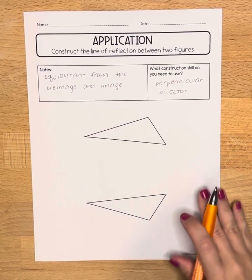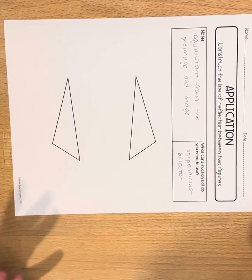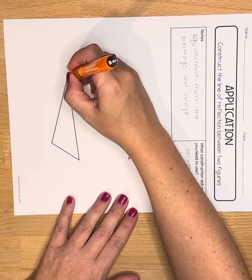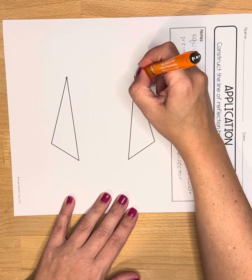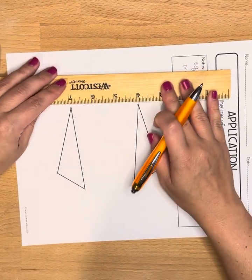All right, to start off I'm just going to rotate my paper a little bit here. I'm going to find any two corresponding points from the pre-image and image and I'm going to connect them. Okay, so I'm going to pick these two. We are going to use a straight edge to connect them.